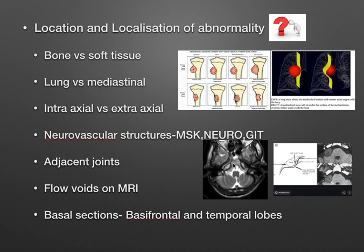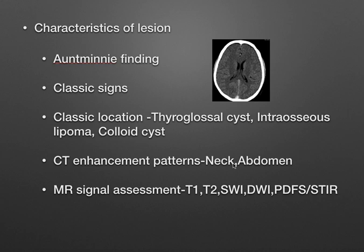The basal sections are very, very important. Very small contusions, small lesions, small meningiomas, and temporal arachnoid cysts are usually located in the basifrontal and basitemporal lobes. You should never miss those lesions — they could be the cause of the patient's complaints. So basal sections are also critical.